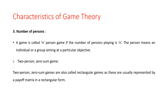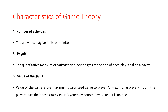In the next part, we will discuss this problem with some examples. The fourth characteristic is the number of activities, which may be finite or infinite. The fifth characteristic is the payoff — the quantitative measure of satisfaction a person gets at the end of each play is called a payoff.